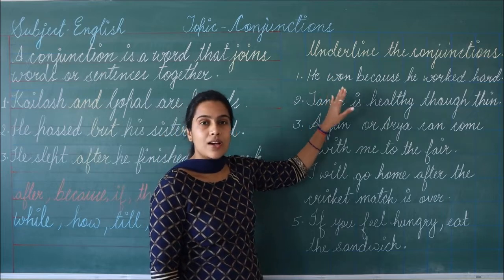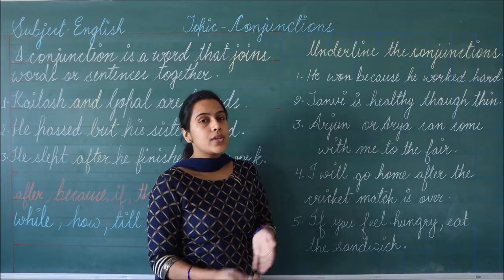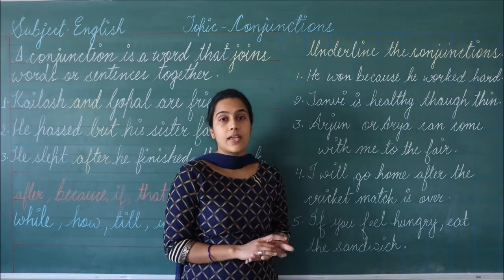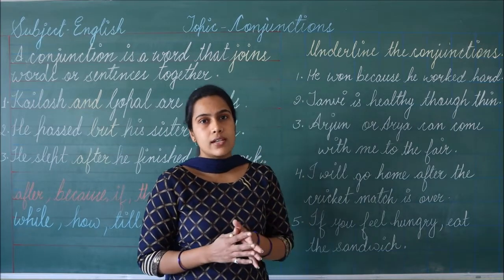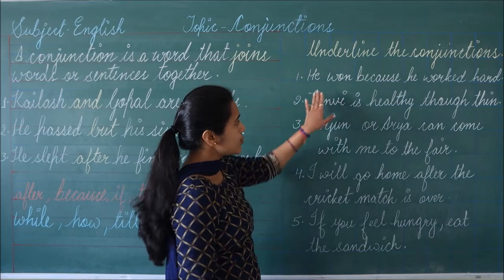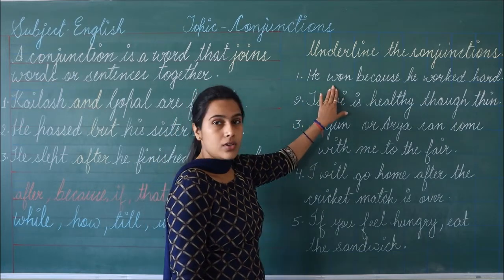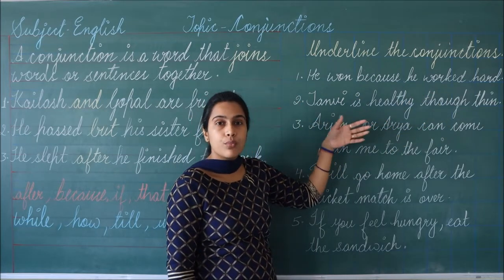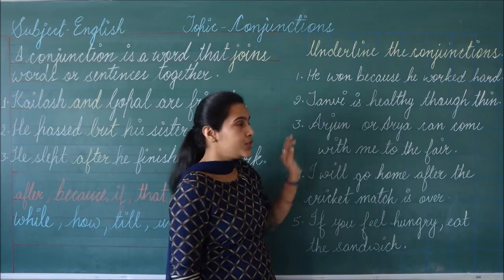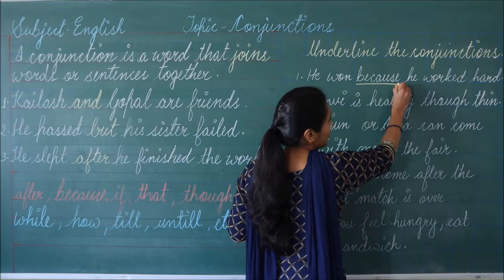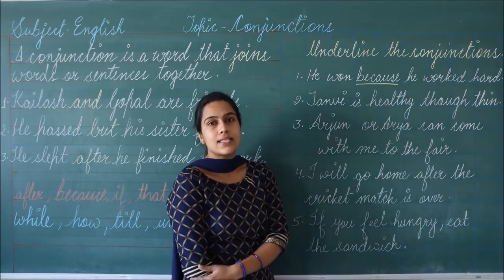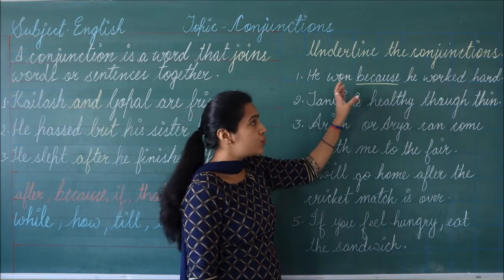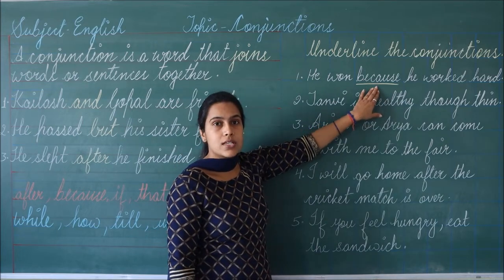In this exercise, you have to underline the conjunctions — आपको conjunctions को underline करना है, means उन words को underline करना है जिनको आपने join करने के लिए use किया है. The first question is: 'He won because he worked hard.' वो इसलिए जीत गया क्योंकि उसने बहुत मेहनत की थी. We are using the word 'because' to join the first sentence and the second sentence, to give the reason. So the word 'because' is our conjunction.